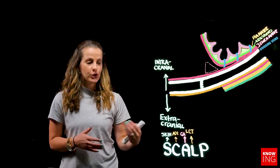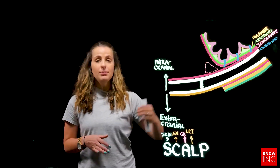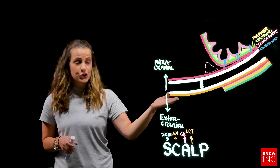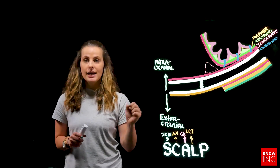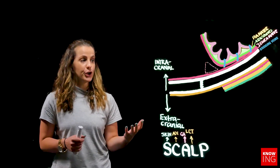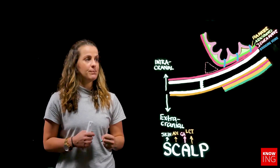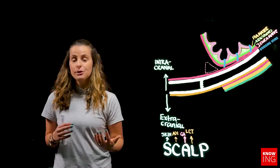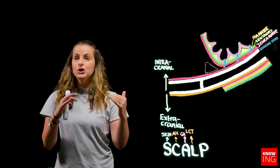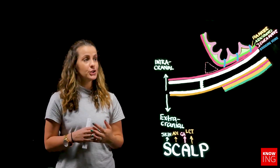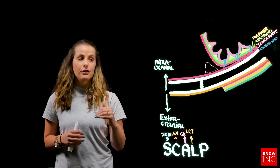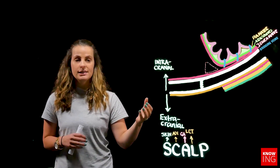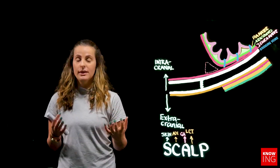To recap: from superficial to deep in a normal healthy individual, we have the skin, followed by the adipose connective tissue layer, then the galea aponeurosis in pink, which attaches directly to the periosteal layer of the bone. Moving into the cranial cavity, the endosteal layer of bone is in direct relation with the periosteal layer of the dura mater. The dura mater consists of two parallel layers — the periosteal and visceral layers. Deep to the visceral dura is the arachnoid mater, with CSF flowing in the subarachnoid space just deep to this, and the pia mater in direct contact with the brain parenchyma.